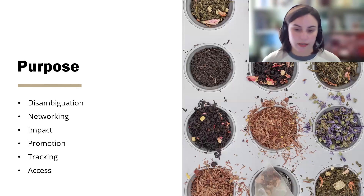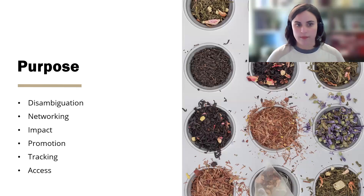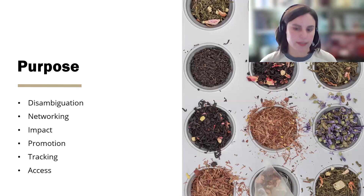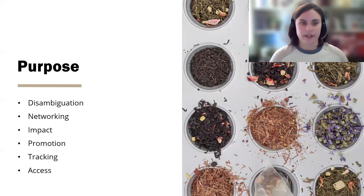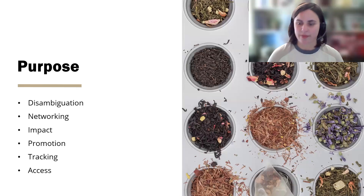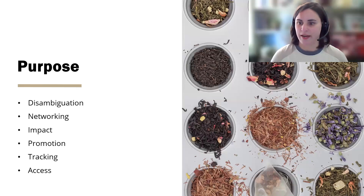Access is another big purpose. Thinking specifically about how you can help other people access the full text of your research is important when considering profiles and identifiers. Tracking is another feature — if you're part of an institution that requires or encourages you to use their own system for accreditation or evaluations, keeping track of what is happening at a particular institution with their authors is one feature. And there are always other purposes showing up as they tweak and improve these systems.